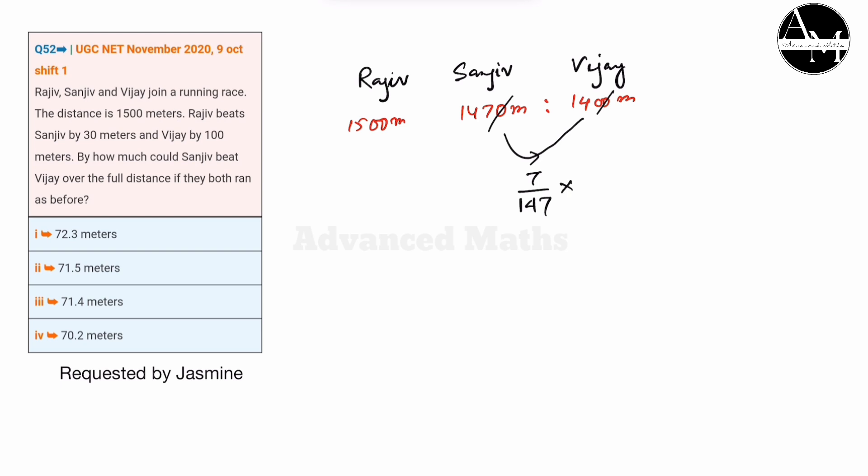Taking 1500, this is the distance. After calculation, the answer is 71.428 meters. The answer correct to one decimal place, the option is 71.4 meters. Thank you.